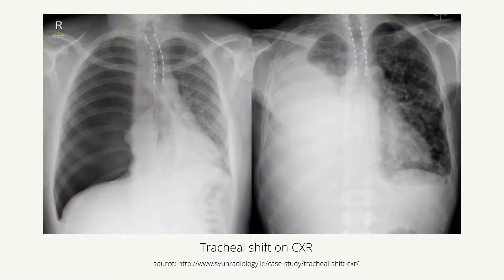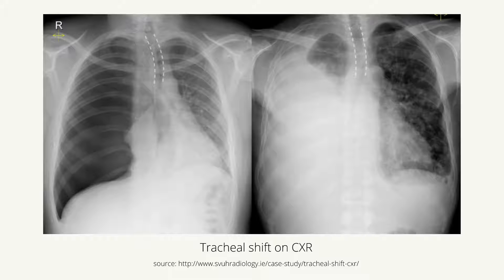Tracheal deviation to the unaffected side, which is more common with tension pneumothorax. Reduced or absent breath sounds on the affected side. Asymmetrical chest wall movement. Hyperresonance on percussion due to trapped air, which is more common with pneumothorax. Dull percussion, which is more common with hemothorax. Subcutaneous emphysema due to air accumulating in subcutaneous tissue.